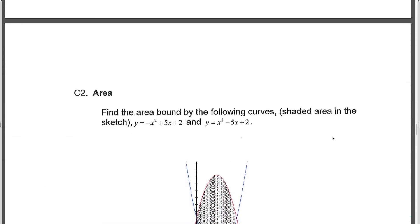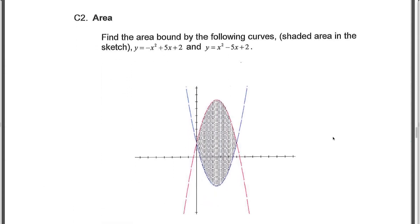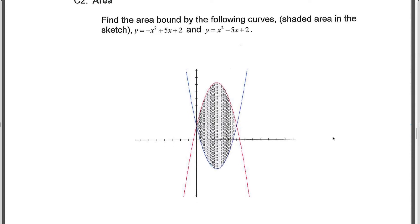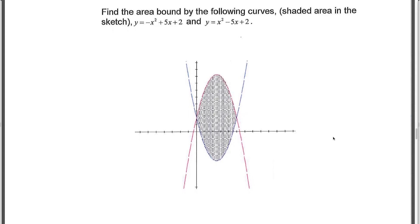So we'll move now to the next question, which is an area problem. And we're asked to find the area bound by the following curves. And we have two curves. We can quickly identify the first curve here as the red one, because it opens down and the x is negative, in which case this here is going to be the blue curve.